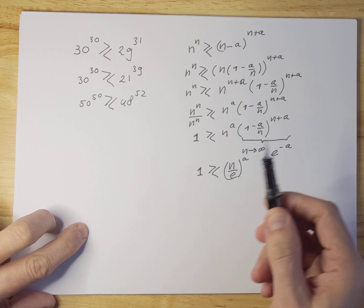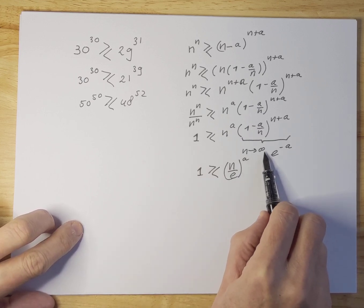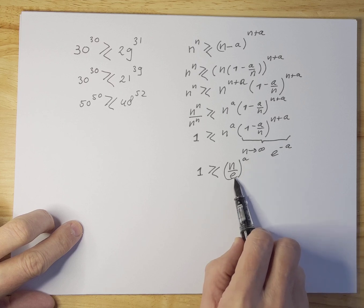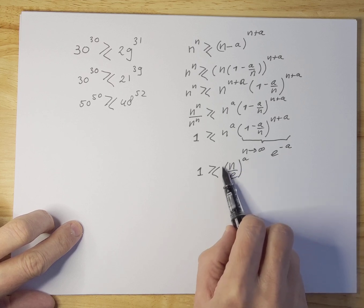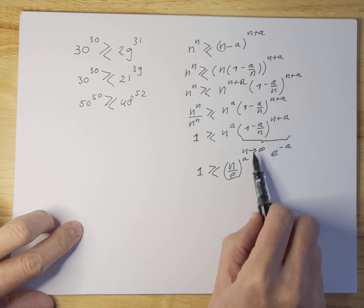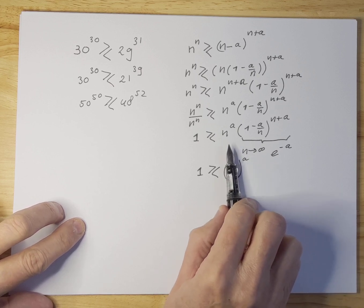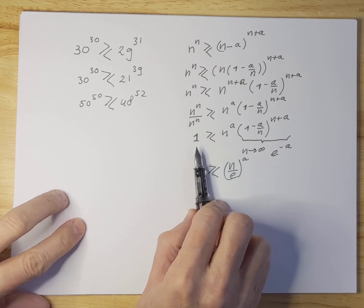So given that information you can already tell if n is for instance three or more this number is bigger than one, right. So if n is three divided by e, even if e is not reached because n doesn't get to infinity this number will be a little bit smaller, this will still be bigger than one. You power that to a certain power of one or more and you will still be okay, the number will still be bigger on the right hand side than it is on the left hand side.